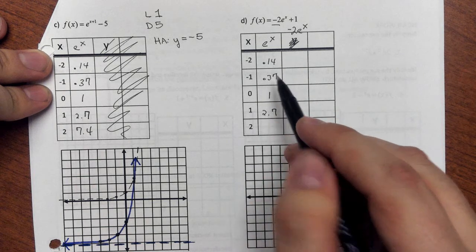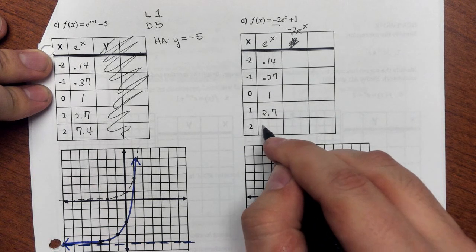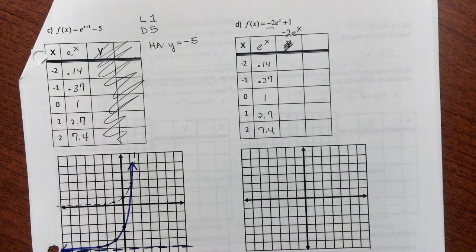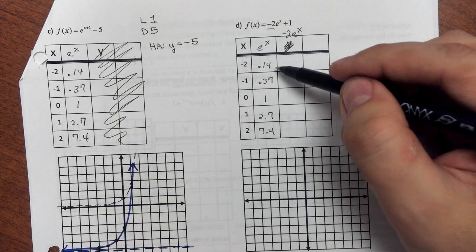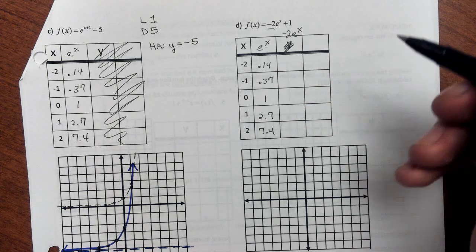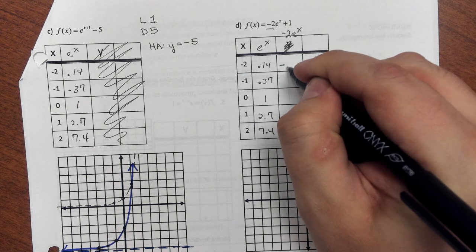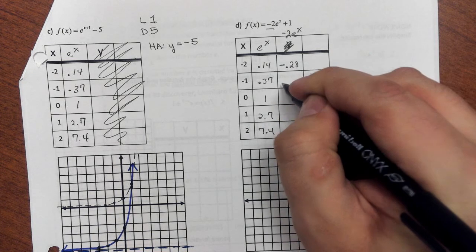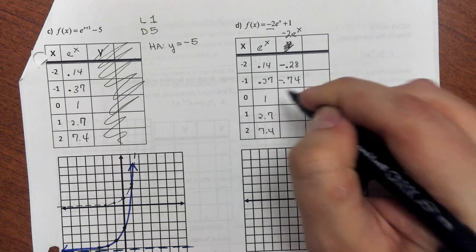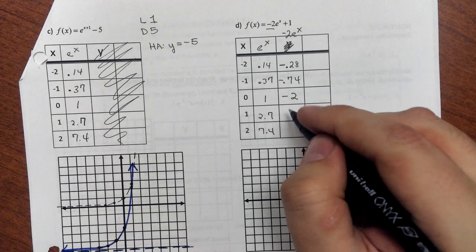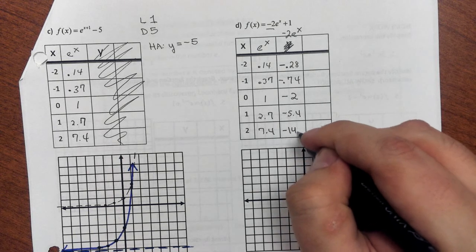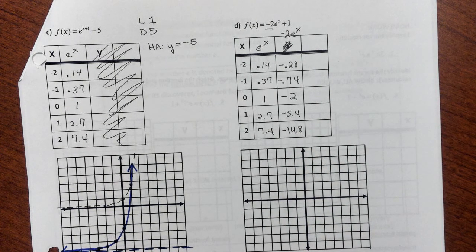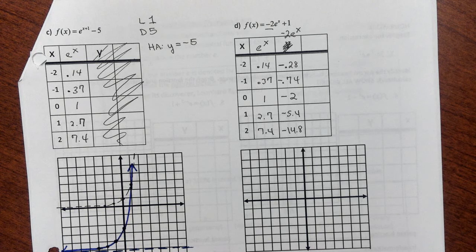And I said before, nearest tenth is about all you can use if you're graphing by hand because you can't get much more accurate than that. But since I'm doubling these, that's why I've included 0.14, 0.37. When I double them, having that extra accuracy will help me get a better image of what I should see here. So negative 2e to the x, what that is going to do is take all of these outputs and just multiply them by negative 2. So 0.14 should become negative 0.28. 0.37 should become negative 0.74. 1 becomes negative 2. 2.7 becomes negative 5.4. And 7.4 will become negative 14.8, which most of the time you're not going to use. And definitely on this graph, this graph is not large enough to use that.